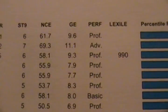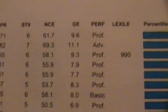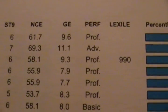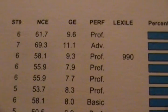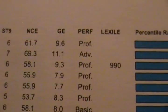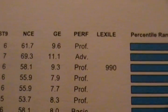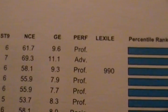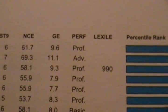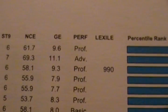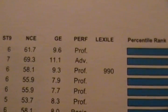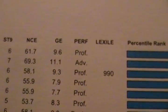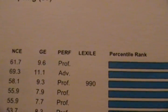The next one is grade equivalent, GE, and this is really, really misunderstood. This student scored a grade equivalent of the sixth month of the ninth year. That does not mean she's ready to jump up and do ninth grade work. It just means she scored as well on the test as an average student who is in the sixth month of ninth grade. Remember, she's a sixth grader.